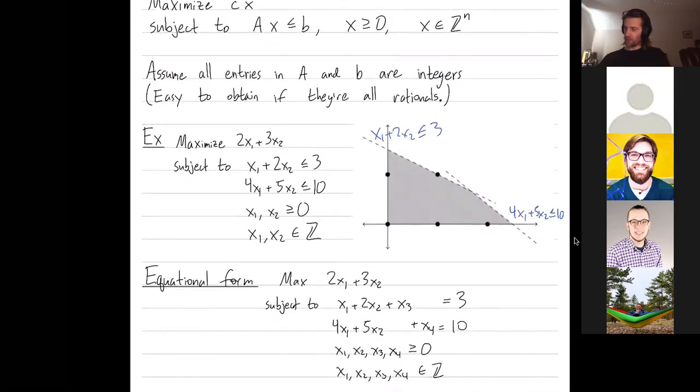So pretend we were just going to solve the integer problem first. The direction vector that we're trying to optimize is pointing hopefully that way. So first we're just going to solve the problem forgetting about the integrality constraints.